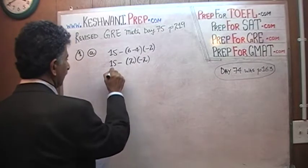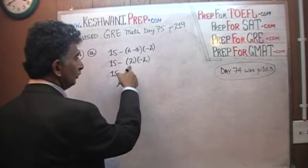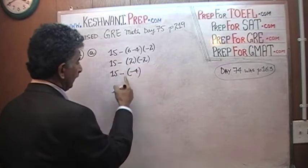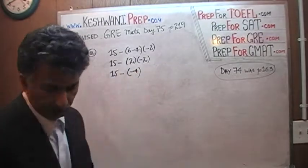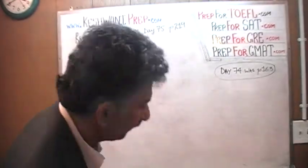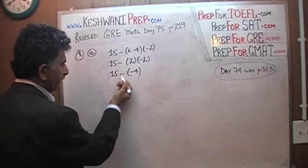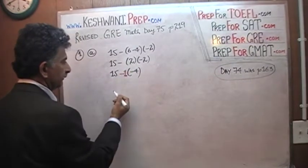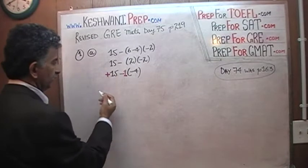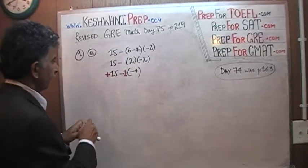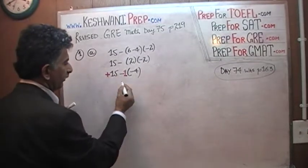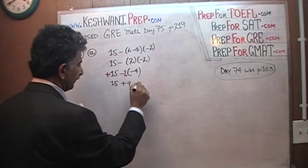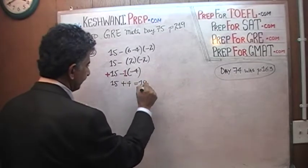Now we are going to do this part. So 15 minus 2 times negative 2 is negative 4. This negative and this negative becomes positive. What it is in reality, this negative that you see here is negative 1. And this is positive 15. So negative 1 times negative 4 is positive 4, and positive 15 gives us 19. That was A.